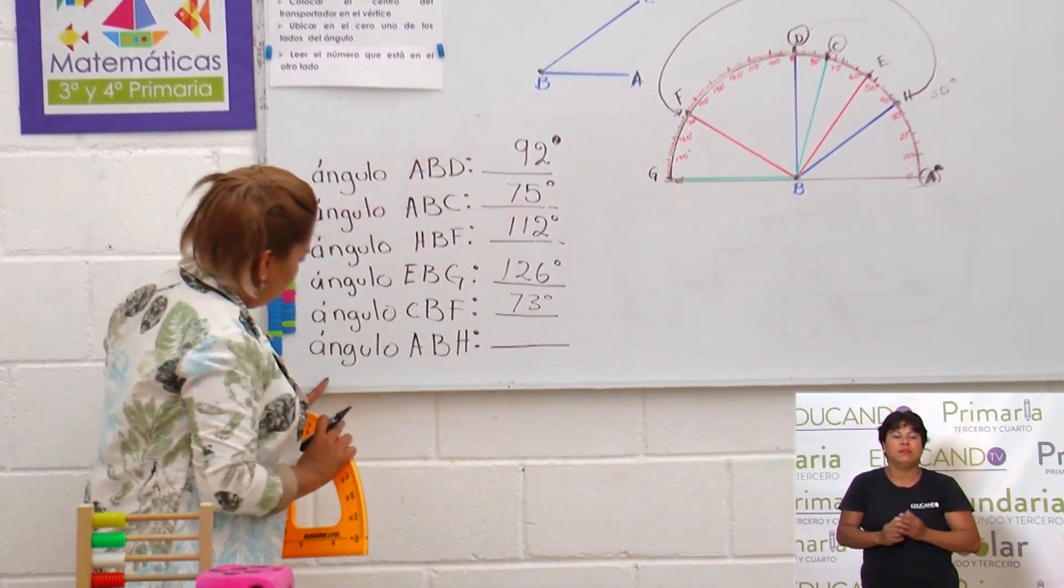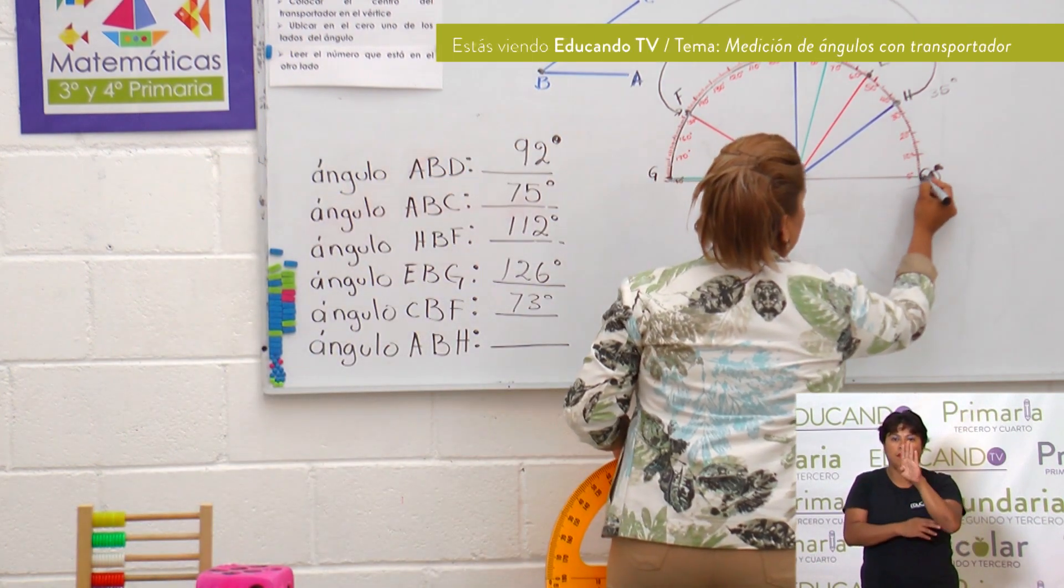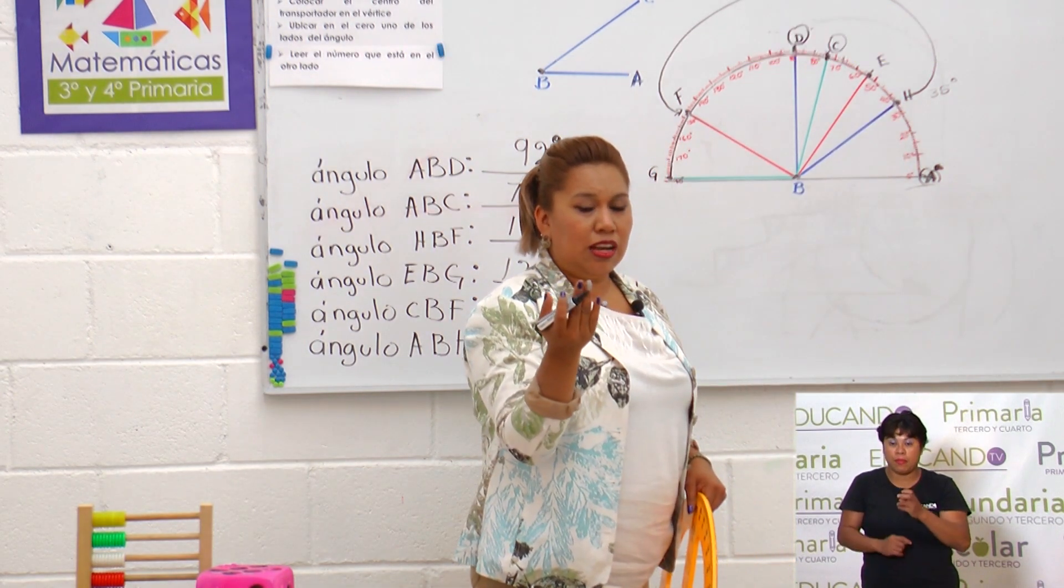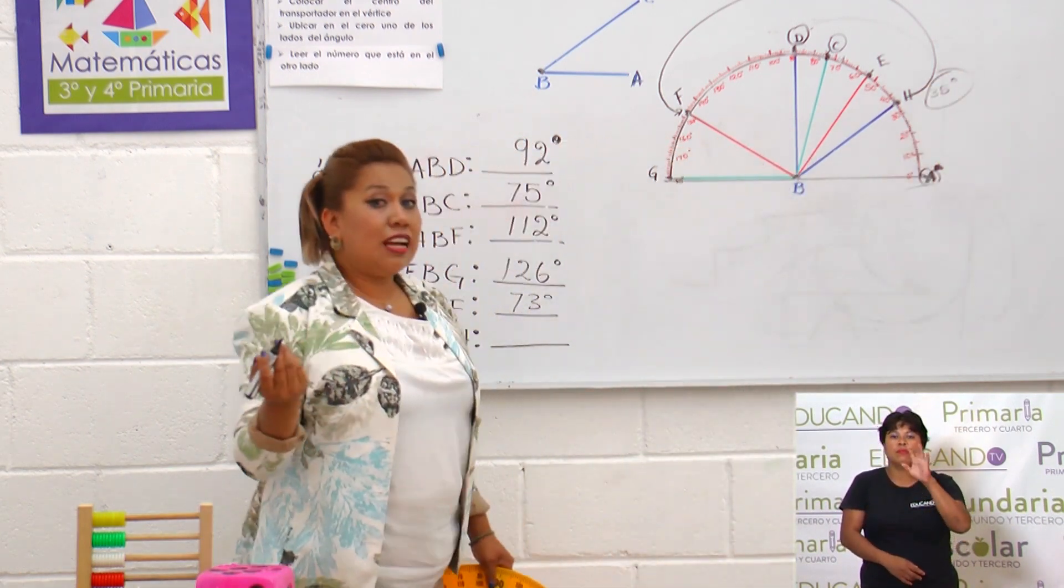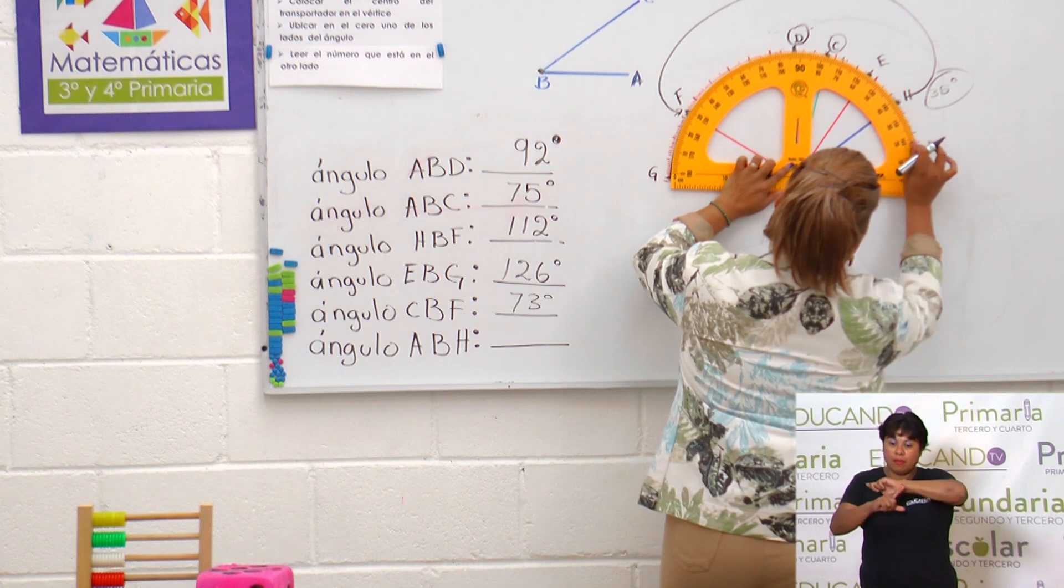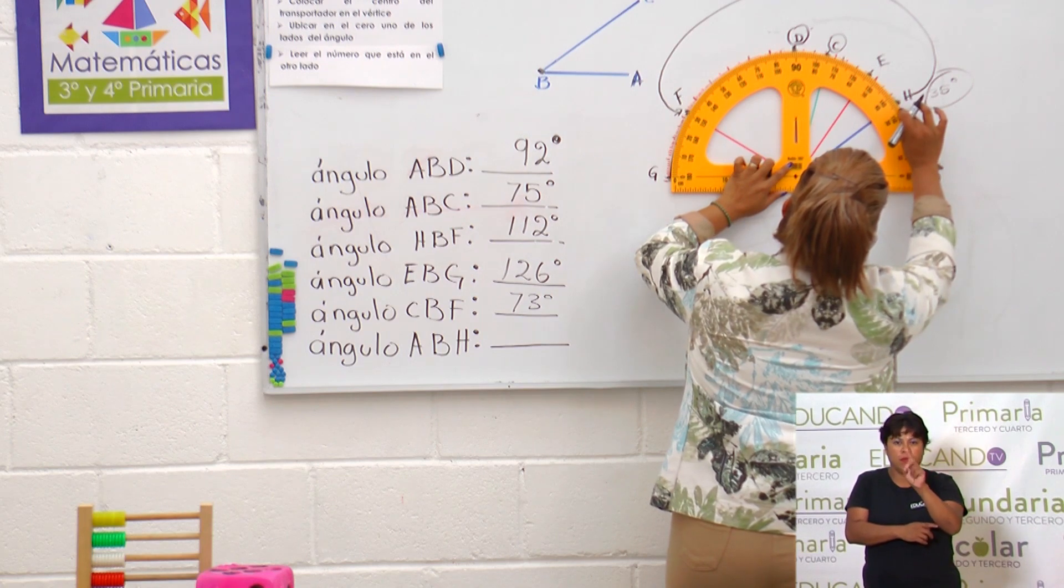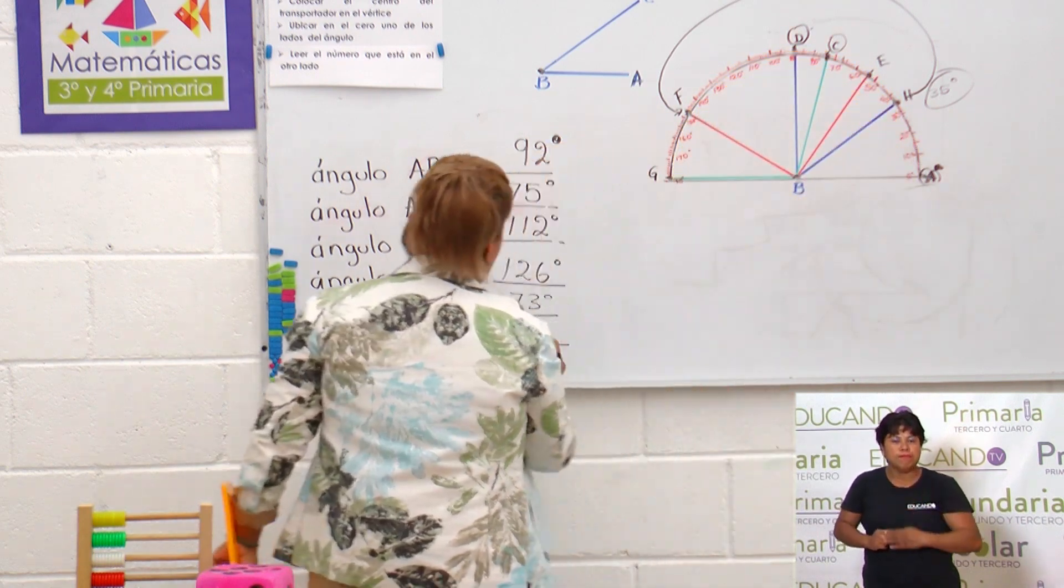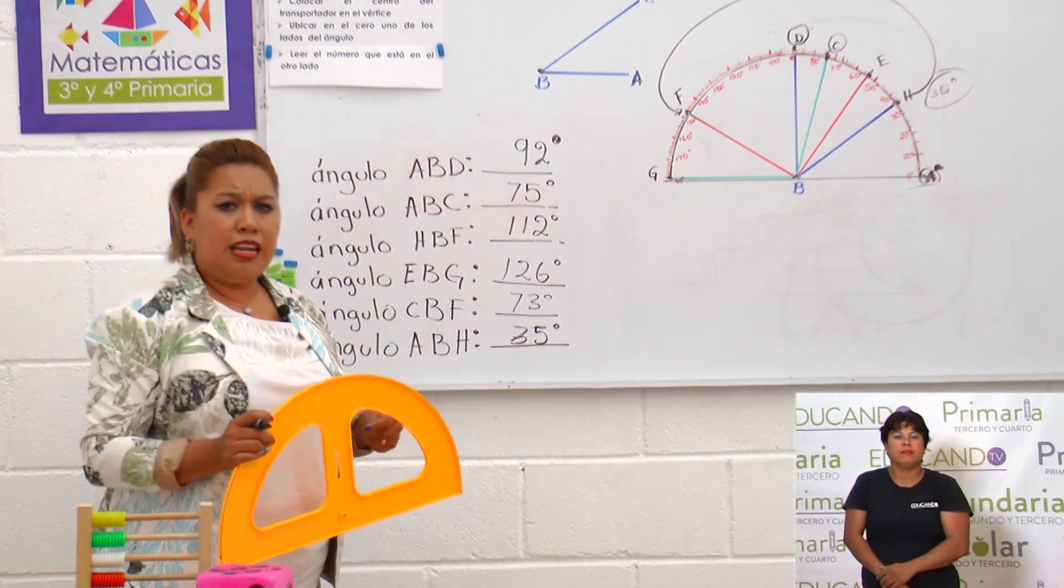Muy bien. Vamos a hacer el otro: ángulo A, B, H. A, B, H. ¿Recuerdas cuánto medía hace un rato que lo tomamos como referencia? Medía 35 grados. Pero si lo quieres comprobar no hay problema. Ubicamos: 10, 20, 30, 31, 32, 33, 34, 35 grados. Muy bien. Entonces tenemos acá 35 grados.